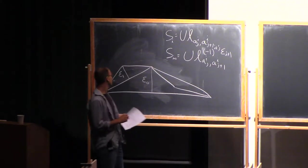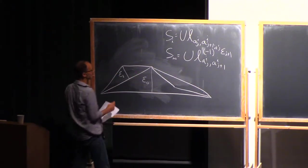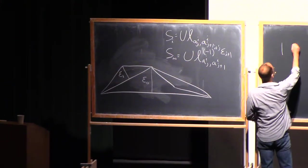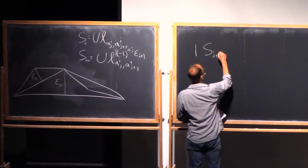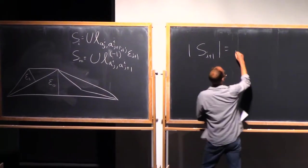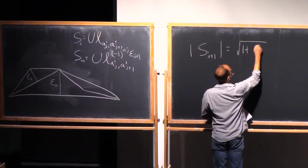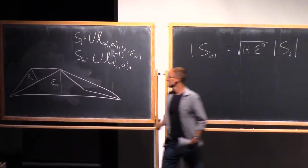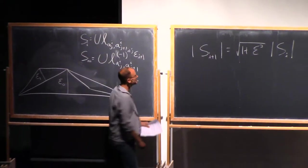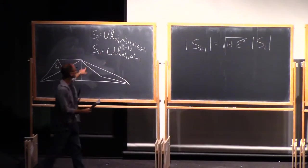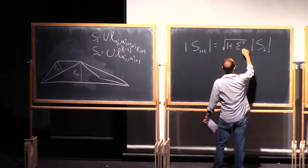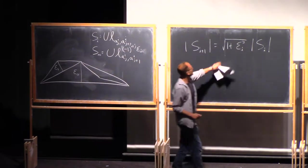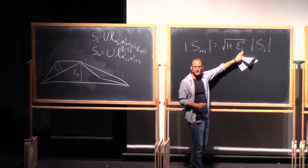And now what happens when we do this? So recall our computation from yesterday, which was simply that if we wanted to know how the length changed, then the length of s i plus 1, we got to it by saying it was the square root of 1 plus epsilon squared times the length of s i. This is just because we do our nice little Pythagorean theorem here. And now, of course, if we're moving out by a different amount at each stage, it's going to be 1 plus epsilon i squared.